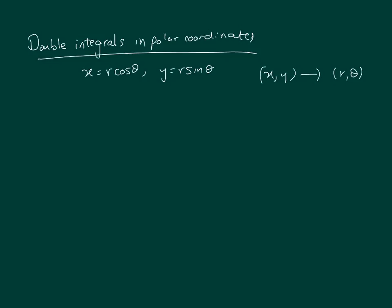Where you actually use polar coordinates is where you have circles or curves — anything that involves lots of x squared and y squared. That's the best place to use polar coordinates. This is obvious because x squared plus y squared under this transformation becomes r squared cosine squared theta plus r squared sine squared theta, which equals r squared times (cos²θ + sin²θ), and since that equals 1, x squared plus y squared simply becomes r squared.